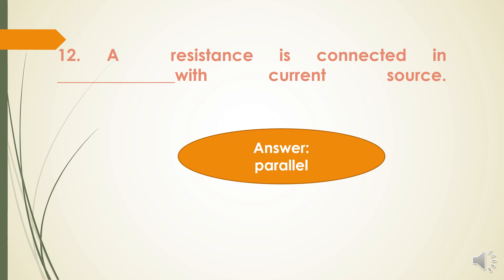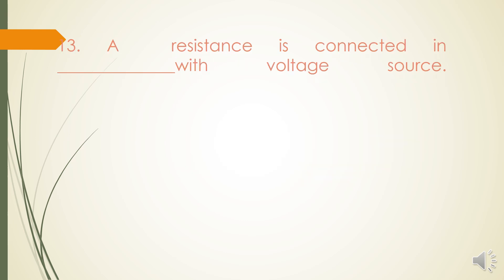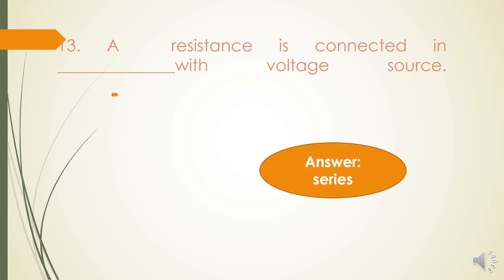Next question: A resistance is connected in dash with the current source. Always remember, for a current source the resistor will be connected in parallel only. So the answer is parallel. Next question: A resistance is connected in dash with the voltage source. For a voltage source, the resistor will be connected in series. So the answer is series.